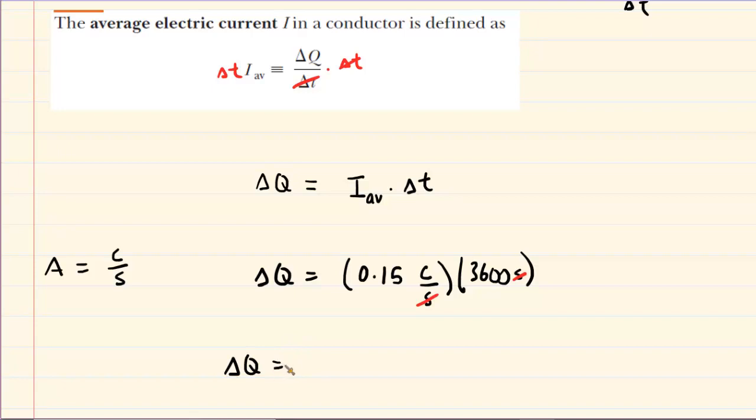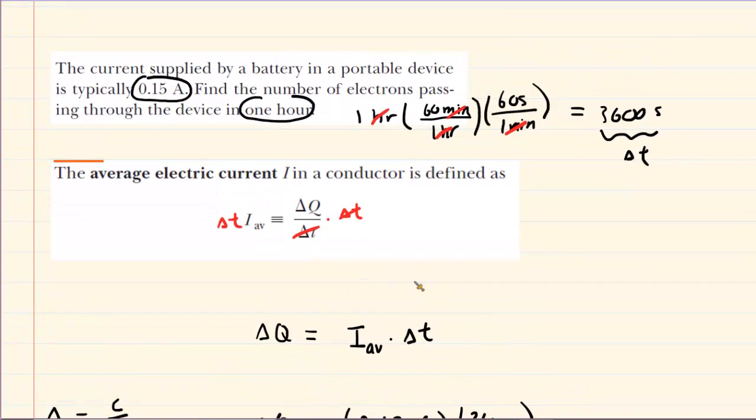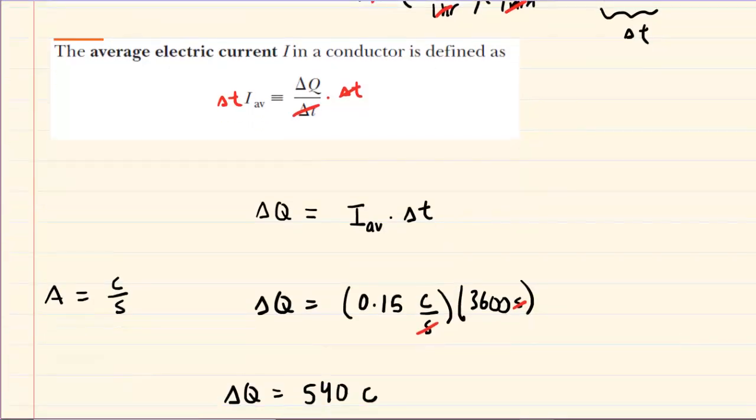But the question doesn't ask us for the number of coulombs of charge. It asks for the number of electrons. So in essence we have to calculate coulombs into electrons.